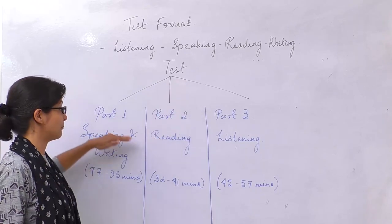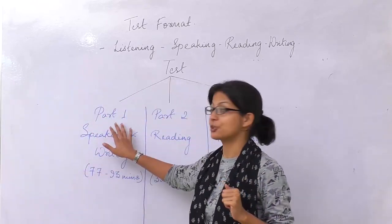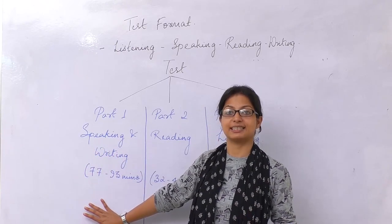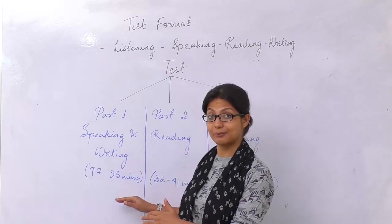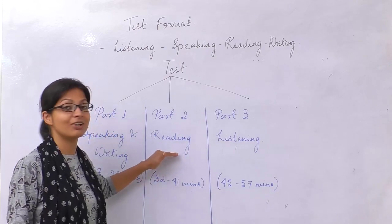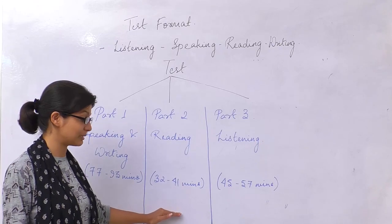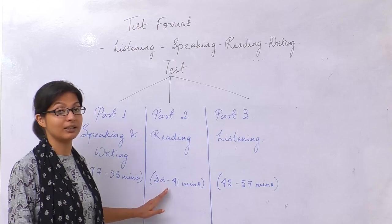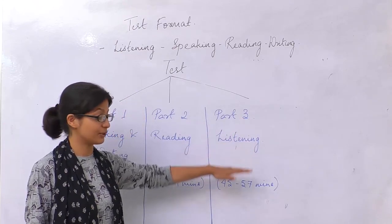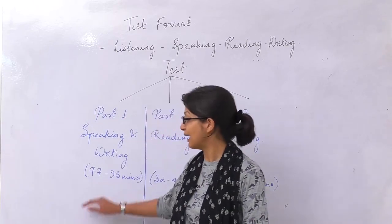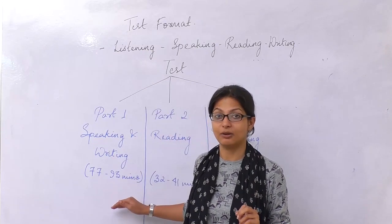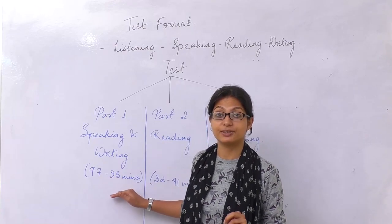Your test is divided into three parts: part one, part two, and part three. Part one is speaking and writing, further divided into eight sections, which will be discussed in the next slide. This section takes around one hour to one and a half hours. Part two is your reading test, divided into six sections, taking around half an hour to 40 minutes. The third and last section is listening, taking 45 minutes to around one hour. The variance in time is because the number of questions in the PTE test is never certain — it depends on the number of questions you may have to answer.